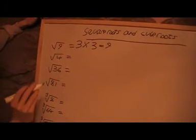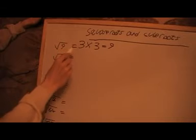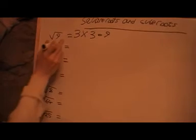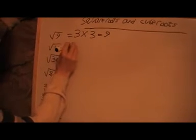Okay, so the square root of 9 is 3. And now I want to find the square root of 4. 2 times 2 is 4, so the square root of 4 is 2.